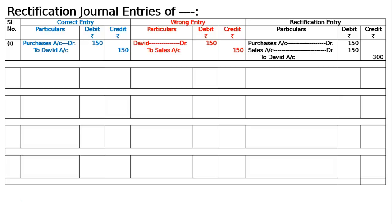This was the mistake. We have to bring Purchases to David, 150 in the rectification entry. To cancel the wrong entry — David was debited — we have to write credit to David, 150. And since sales was credited by mistake, it is to be debited: sales account debited 150. Hence, the rectifying entry is Purchases account debited 150, sales account credit 150, to David 150. Writing 'account' after David's name is acceptable, but omitting it is 100% correct.